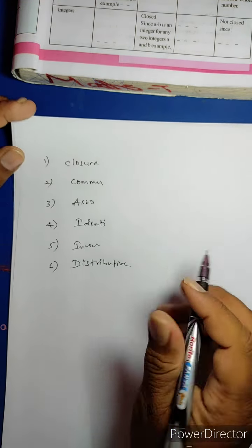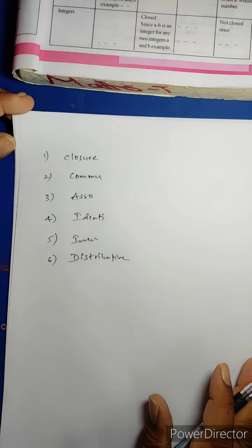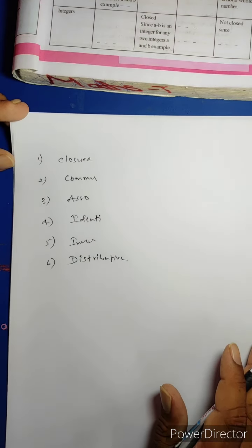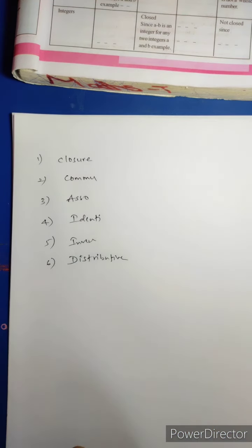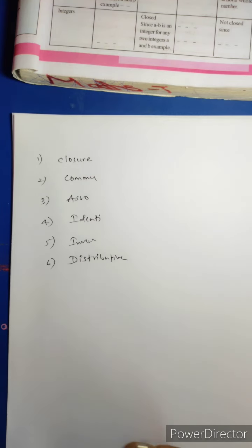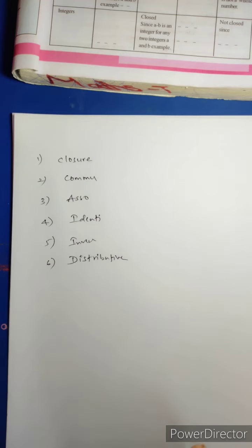For example, Chiranjivi belongs to Telugu film industry. Nagarjuna belongs to Telugu film industry — that is the Closure property. If they both make a film, their team also belongs to Telugu film industry. That is called Closure property.